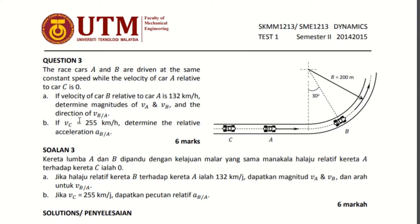I'm taking this question from a previous test, which is 2014 and 2015. It states that race cars A and B are driven at the same constant speed, while the velocity of car A relative to car C is zero. So we have A and B at constant speed, and V_A relative to C equals zero.